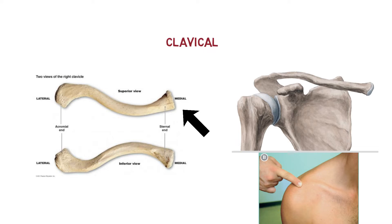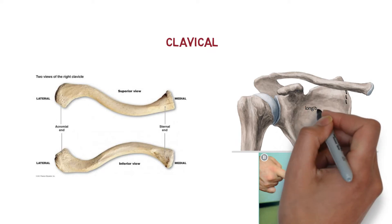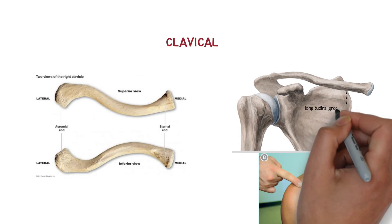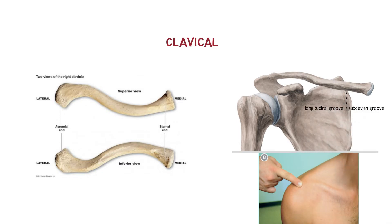The convexity of its medial two-thirds and concavity of its lateral one-third face anteriorly, having a longitudinal groove in the middle third of the shaft facing inferiorly. So this is the anatomical position and side determination of the clavicle bone.